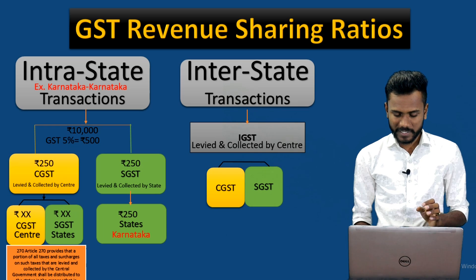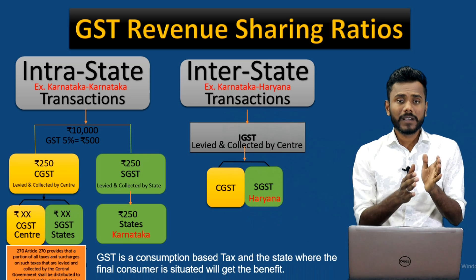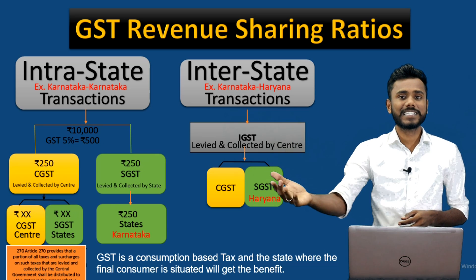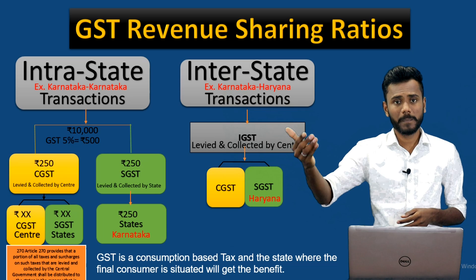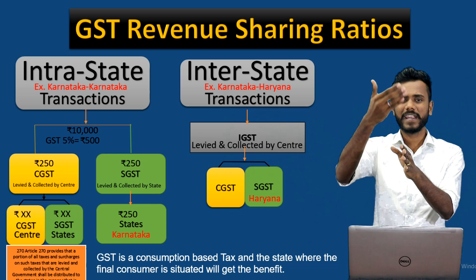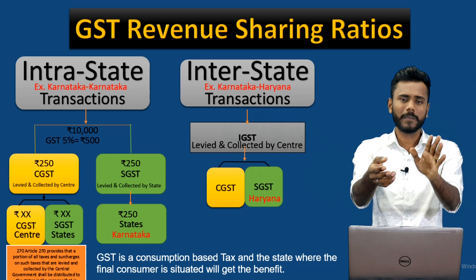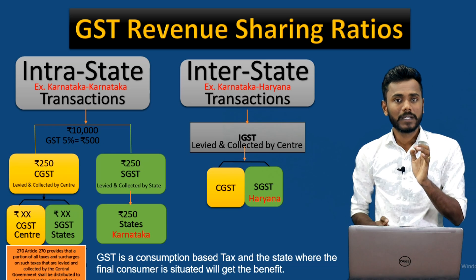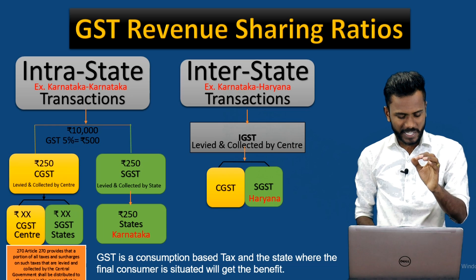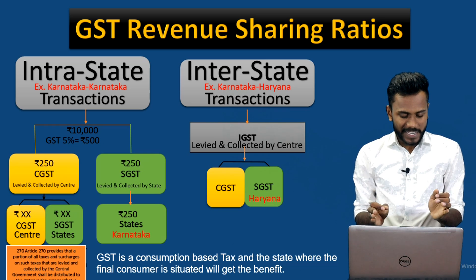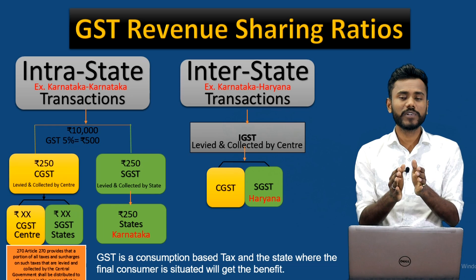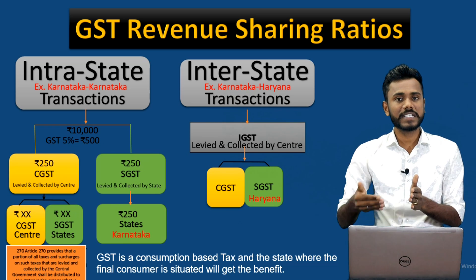Let us understand this with an example. The goods are moving from Karnataka to Haryana. The Haryana customer pays the taxes to the Karnataka vendor. The Karnataka vendor maintains his book of account and handles whatever is liable or refundable from his side. However, the center is going to distribute the taxes to the Haryana government, because GST is a consumption-based tax — wherever the final customer is situated, that state will get benefited. Here the customer is situated in Haryana, so the center distributes the IGST revenue to the state of Haryana.